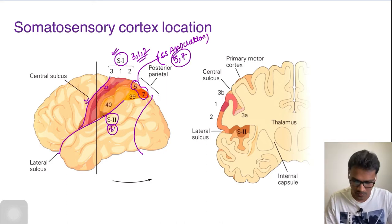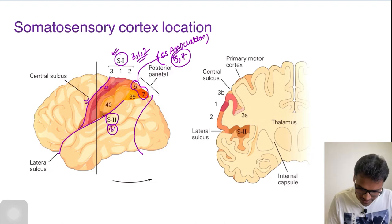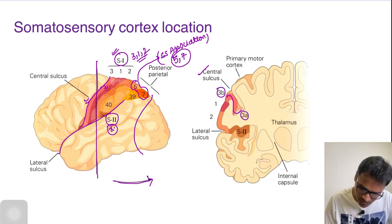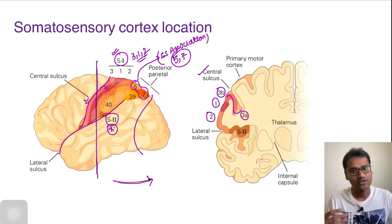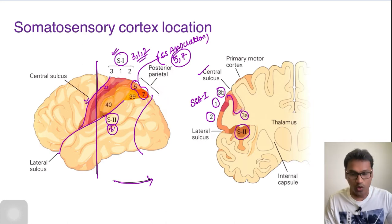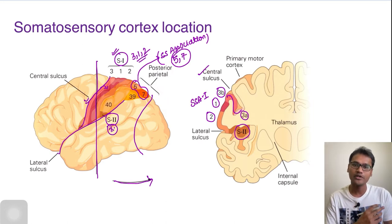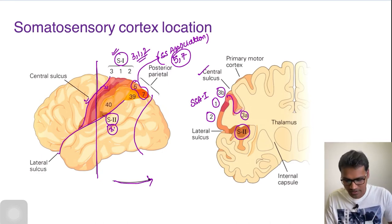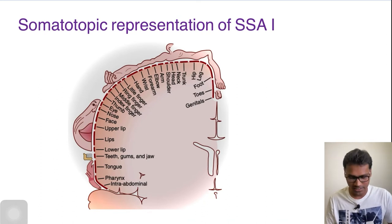In the sagittal section of the brain, the somatosensory area has subdivisions 3A, 3B, 1, and 2. Area 3 is further divided into 3A and 3B. These are the major regions of somatosensory area 1, and here lies somatosensory area 2. All the somatic sensations in the body are going to reach this somatosensory area, and finally they will be perceived so we can understand and make meaning out of the sensations.